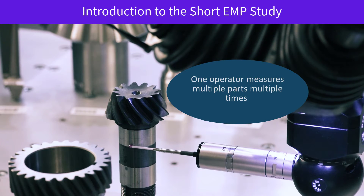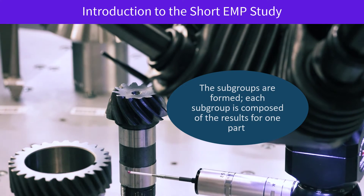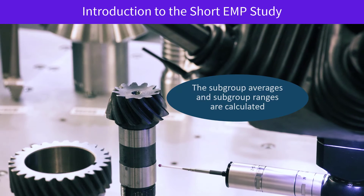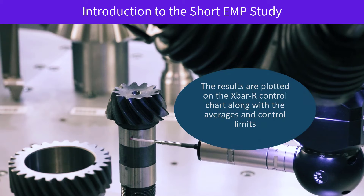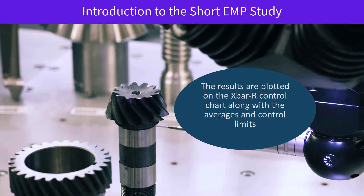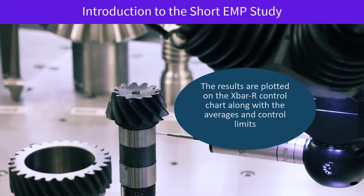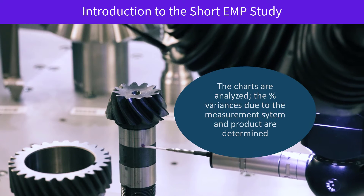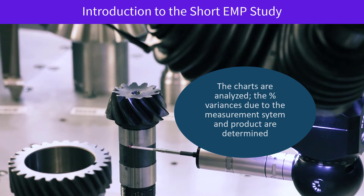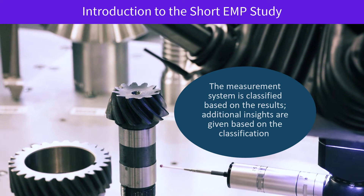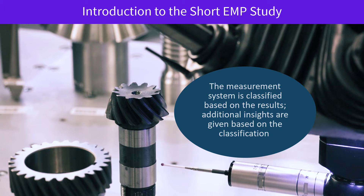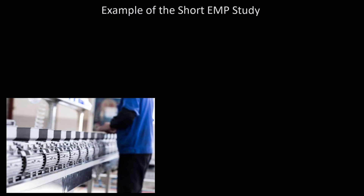The Short EMP Study uses one operator only, measuring multiple parts, multiple times. The subgroups are formed — each subgroup is composed of the results for one part. You calculate the subgroup averages and ranges, then plot the results on an X-bar and R control chart along with the calculated averages and control limits. Then you analyze the charts, determine the percent variances due to the measurement system and product, and the measurement system is classified, giving additional insights based on Dr. Wheeler's classification.